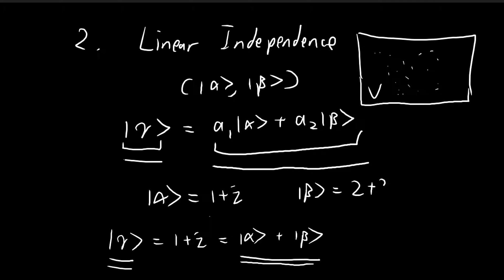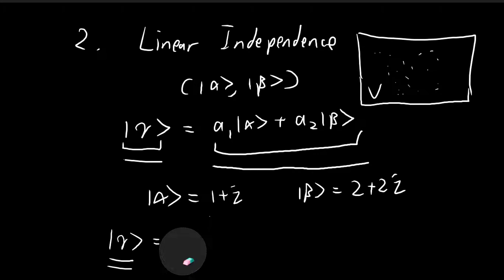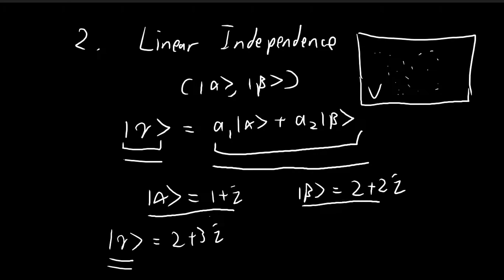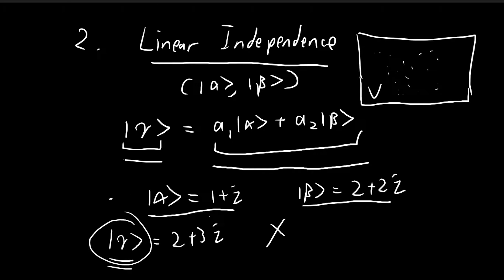Another example: let alpha equal 1 plus i, beta equal 2 plus 2i, and gamma equal 2 plus 3i. You can try however you want to express gamma as a linear combination of alpha and beta, and you'll find that you actually can't do it. So gamma cannot be expressed as a linear combination of alpha and beta, and in such a case we say that gamma is linearly independent of alpha and beta.